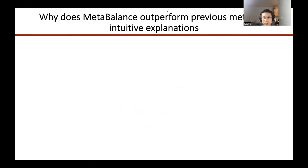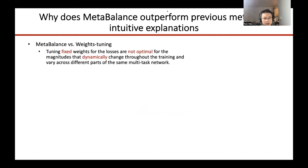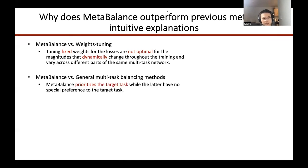Why does Meta-Balance outperform previous methods? First, the magnitudes dynamically change throughout the training and vary across different parts of the network, so tuning fixed weights for the losses is obviously not optimal. That's why Meta-Balance outperforms weight tuning, which is the typical way to handle this imbalance in industry. Second, a possible reason why Meta-Balance outperforms general multi-task balancing methods is that the former prioritizes the target task, while the latter have no special preference for the target task.